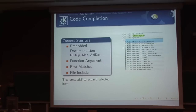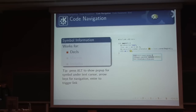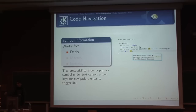Of course, we can do file code completion, going through the include paths for your project, and it just works as you'd imagine. For code navigation, similar to the Alt press in code completion, you can move the cursor around and press Alt or hover over a declaration with your mouse. We show a pop-up giving you information about the symbol under the cursor, and you can click links to jump to the declaration or show all users of that declaration.